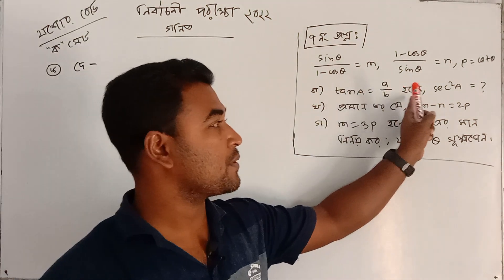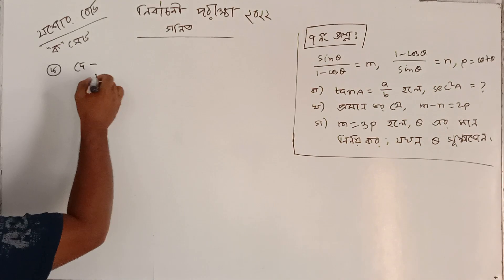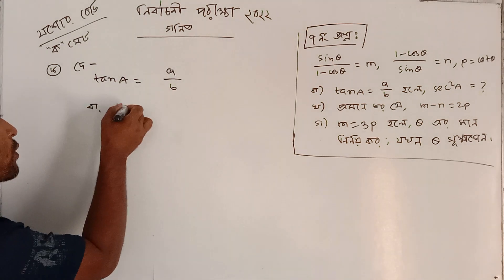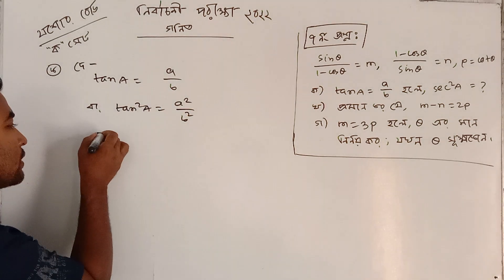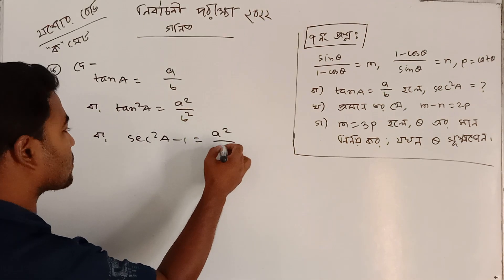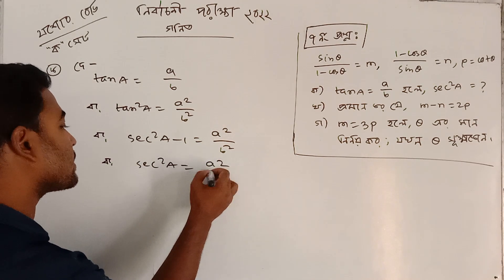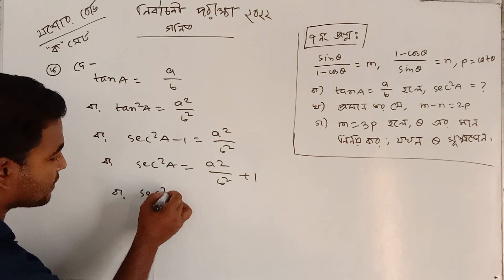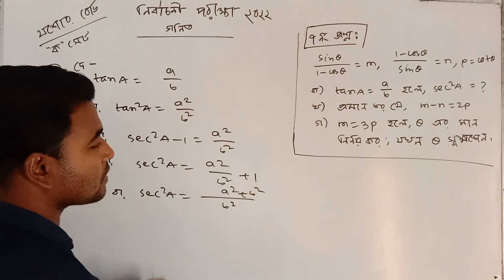tan a equal to a by b, and the second one is equal to a by b. If y is equal to a square by b square, tan²a means sec²a minus 1 equal to a²/b². And sec²a equal to a²/b² plus 1, which gives a²/b² plus 1 equal to a²/b².